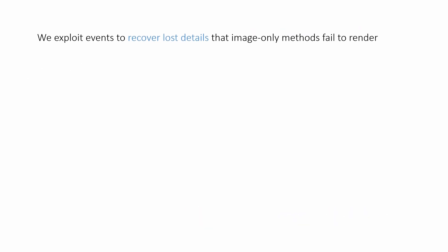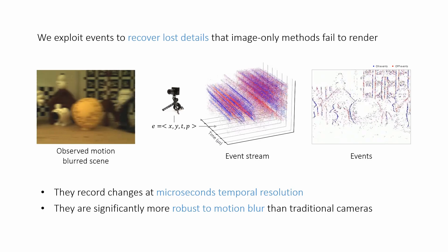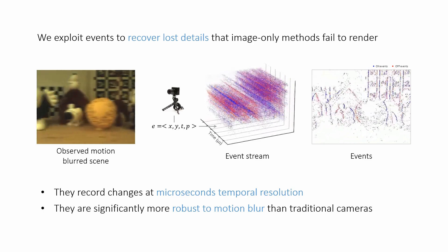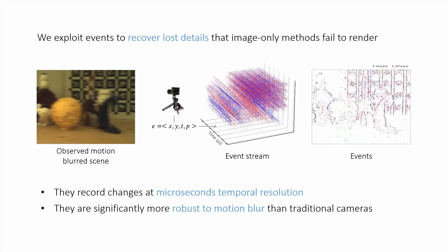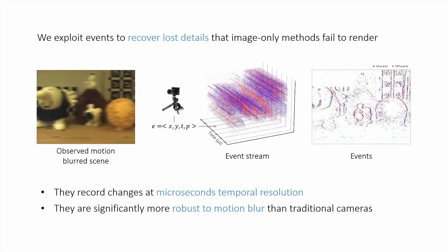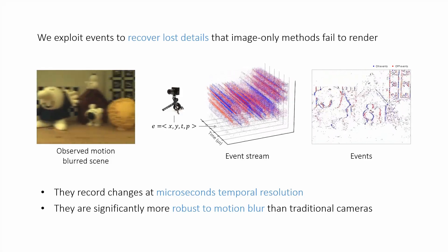Contrary to traditional cameras, which capture images by exposing the frame to light for a fixed duration, event cameras are made of independent pixels that respond to changes in brightness as they occur, featuring sub-millisecond delay and microseconds temporal resolution.